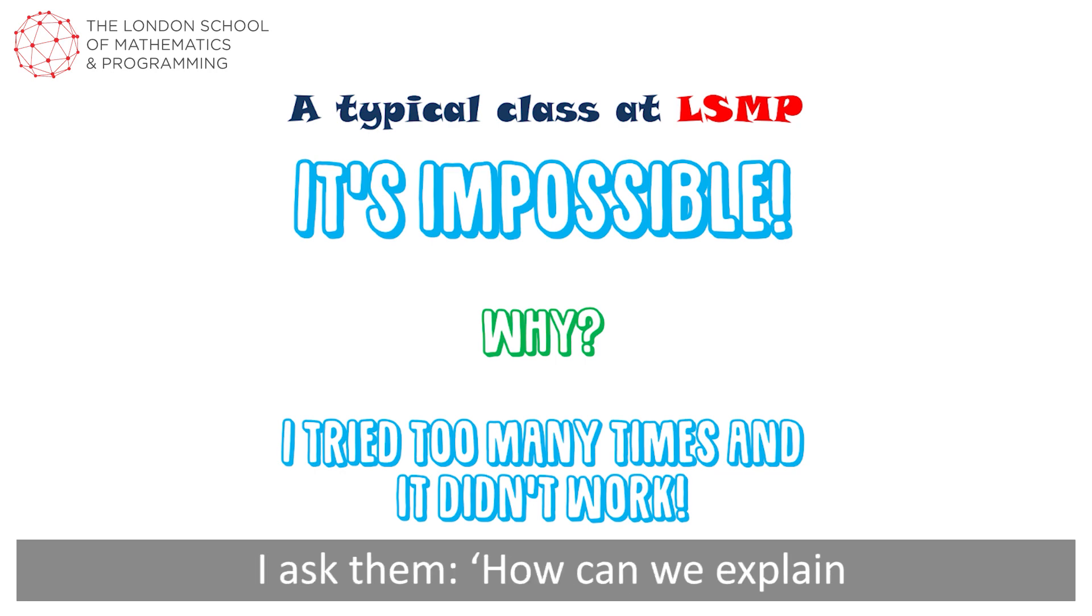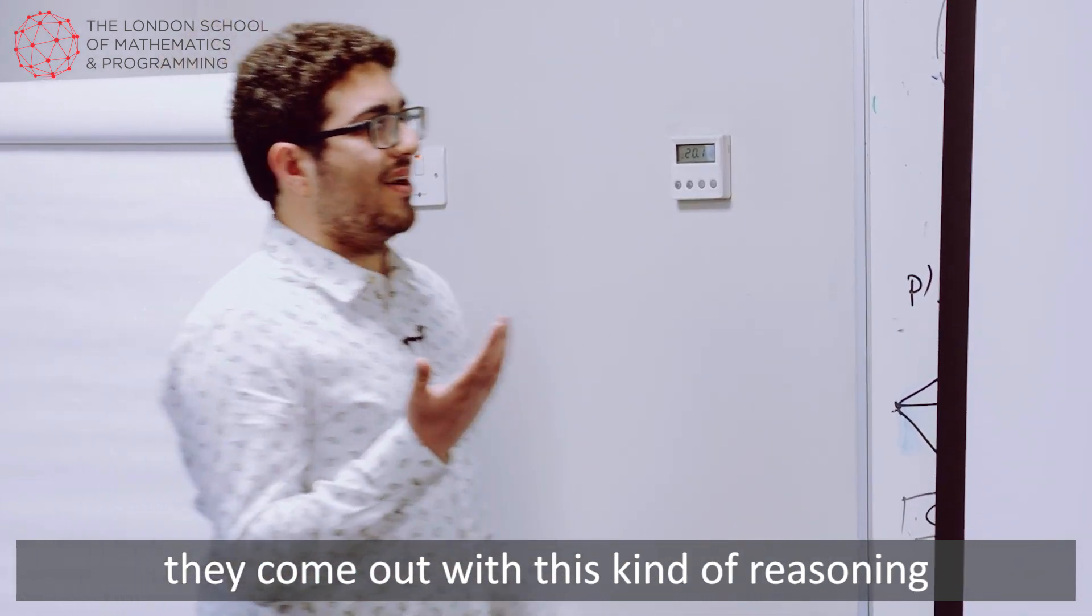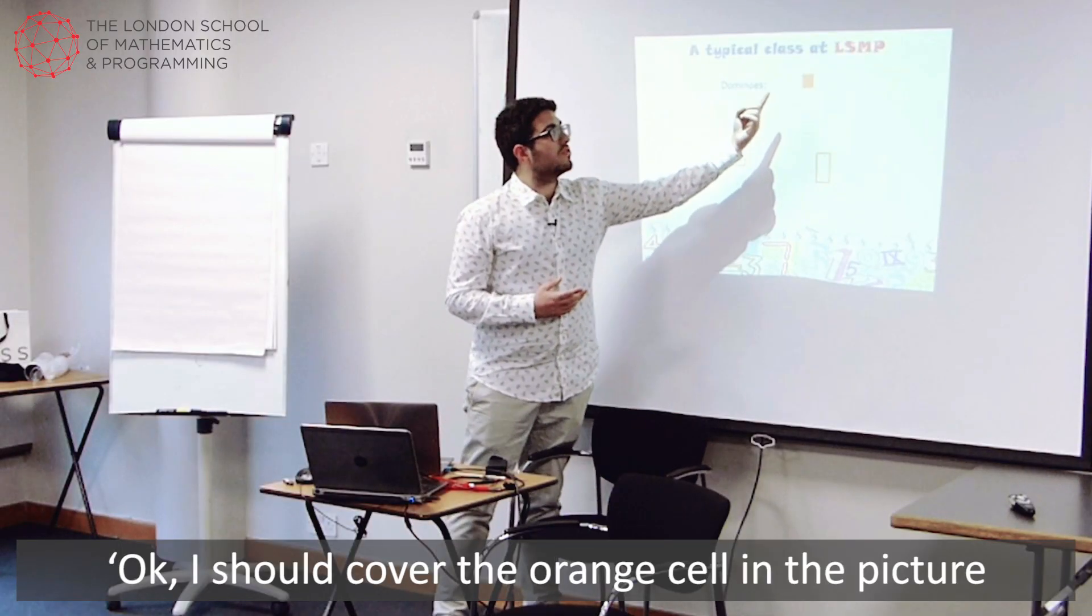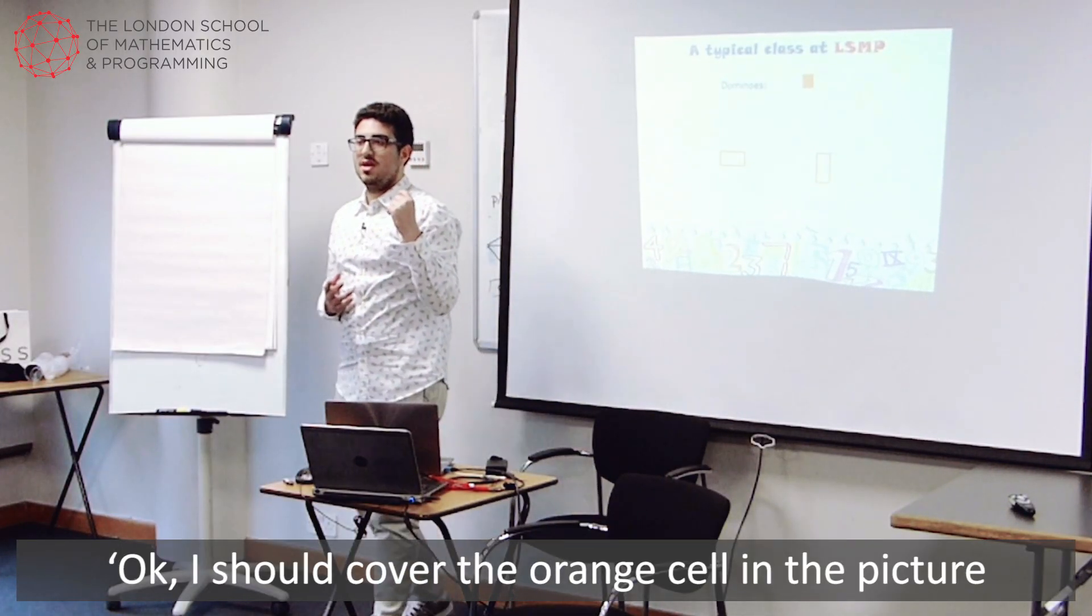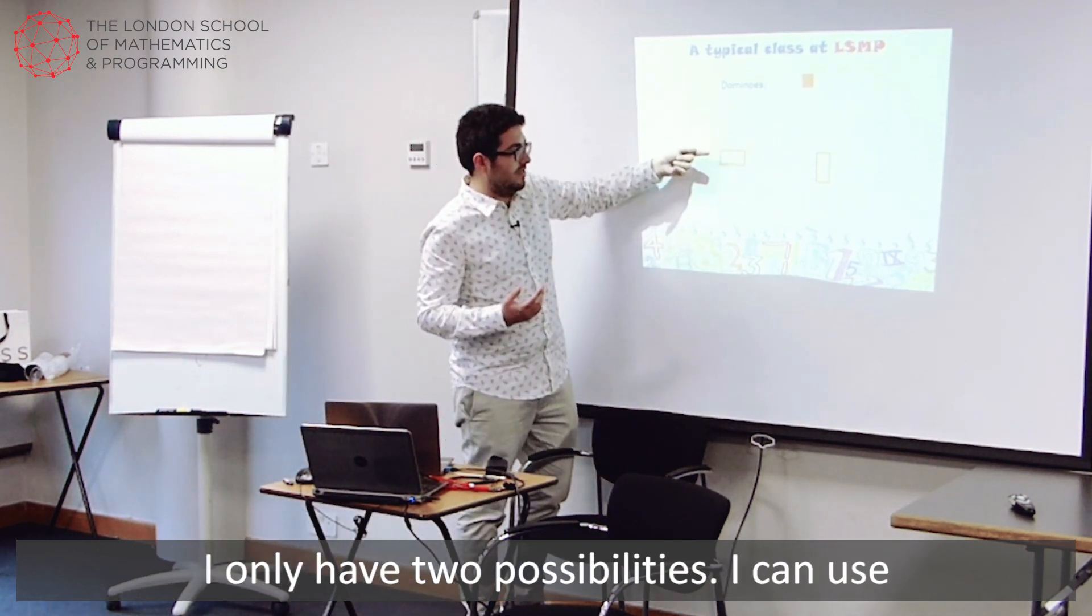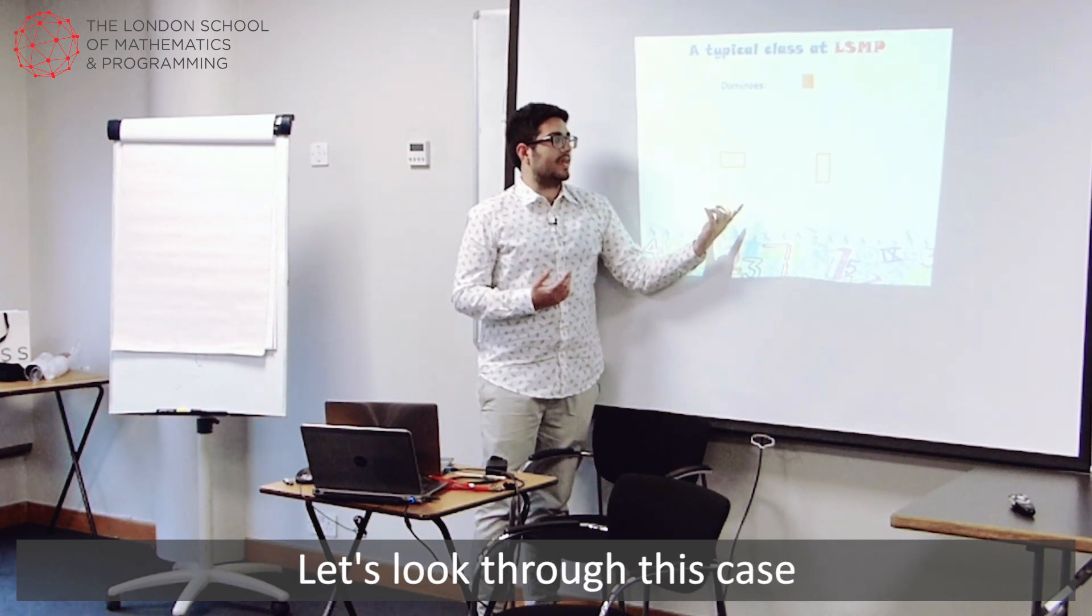So I ask them, how can we explain that the problem is indeed impossible? And at some point with the right hints, they come out with this kind of reasoning. Okay, I should cover the orange cell in the picture. And basically I only have two possibilities. I can use a horizontal domino or a vertical one. Let's look at this case.